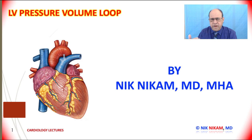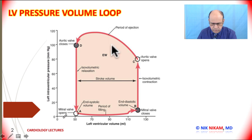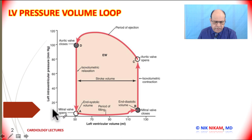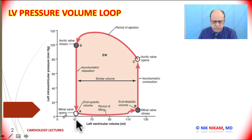Here is a representation of the left ventricular pressure volume loop of a single cardiac cycle. In the bottom we have left ventricular volume plotted, and on the vertical axis we have left ventricular pressure in millimeters of mercury plotted. Let's start with point A — this is the end systolic phase at which time the mitral valve begins to open, and we have a residual volume of 50 ml.